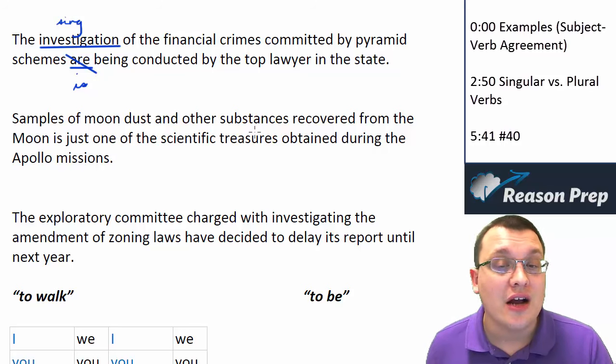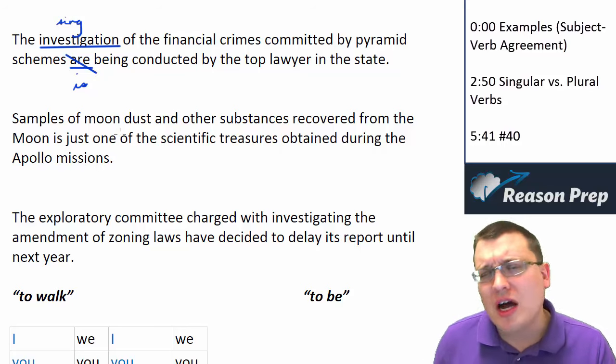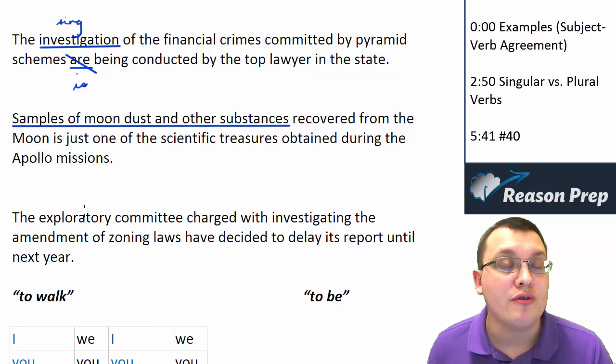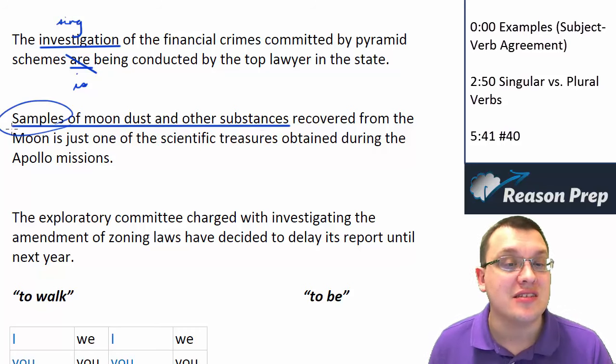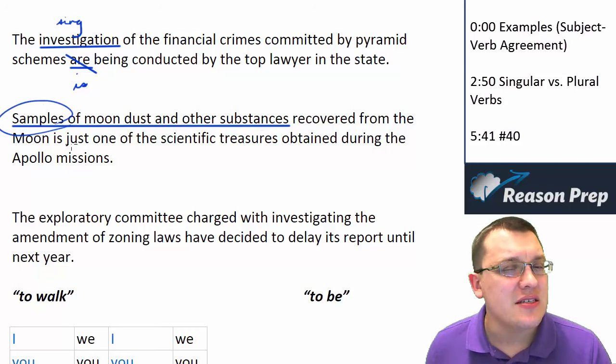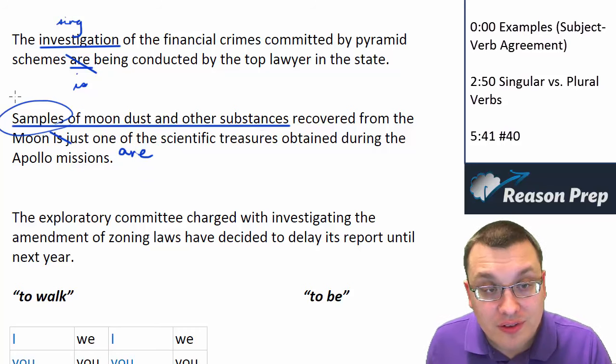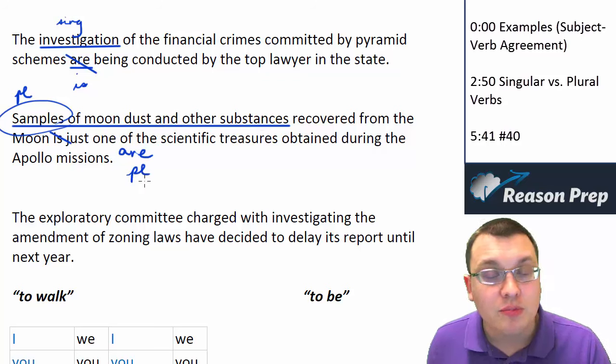When you've got a subject and its verb in the main sentence, you have to make sure they agree singular and plural. Let's look at a couple more examples. Samples of moon dust and other substances recovered from the moon is just one of the scientific treasures obtained during the Apollo missions. What's the subject? It's really the samples. So samples is? No, it's samples are, right? Because you've got a plural subject and therefore we need a plural verb.